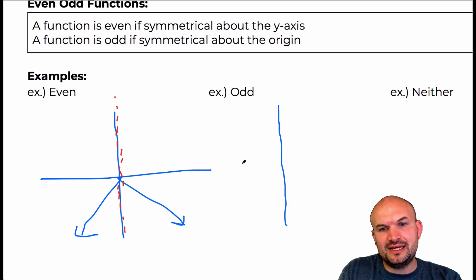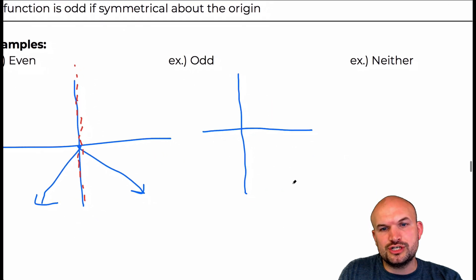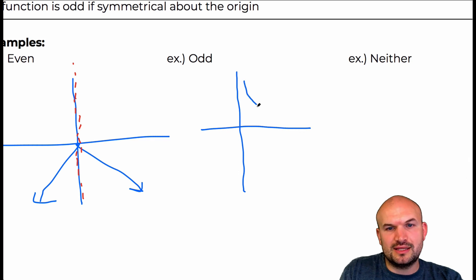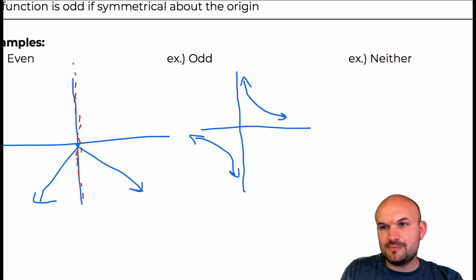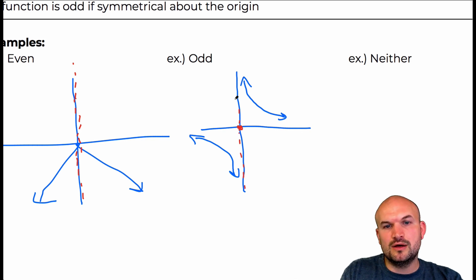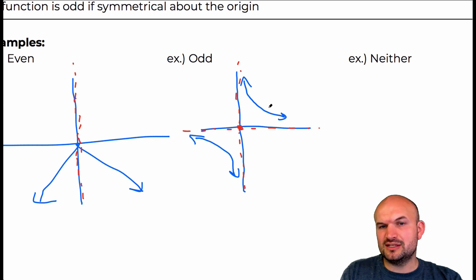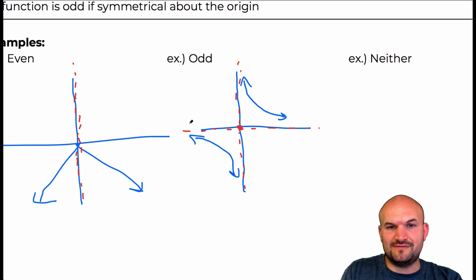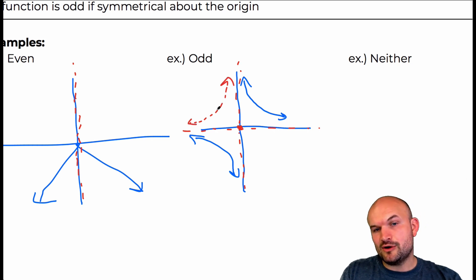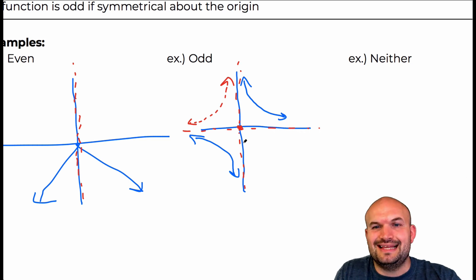Something that's odd would be symmetry about the origin. That could look something like this — this would be your reciprocal function, which we'll talk about. When it's reflective about the origin, that's basically another way of saying it is reflective about the y-axis as well as the x-axis. If we were to flip it over the y-axis and then flip that over the x-axis, we would have the same graph. So therefore, that is odd.